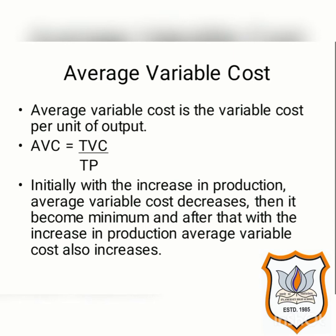Initially, with the increase in production, average variable cost decreases — due to increasing returns to scale, average variable cost initially decreases. Then it becomes minimum, and after that, due to the law of decreasing returns to scale, with an increase in production, average variable cost also increases.